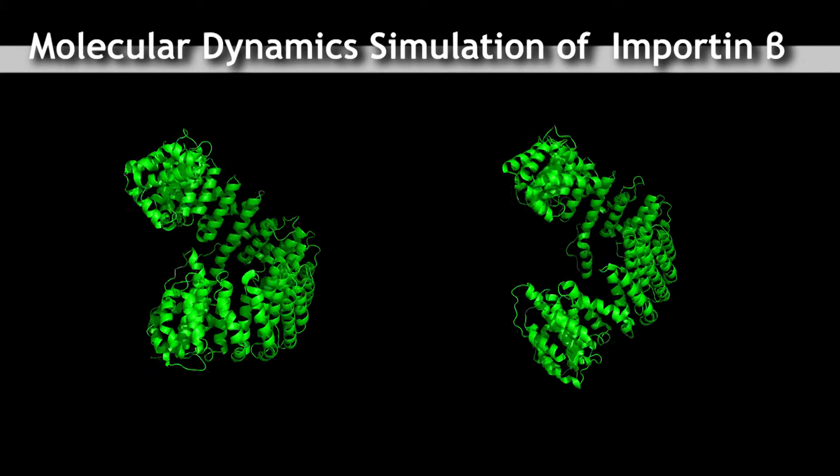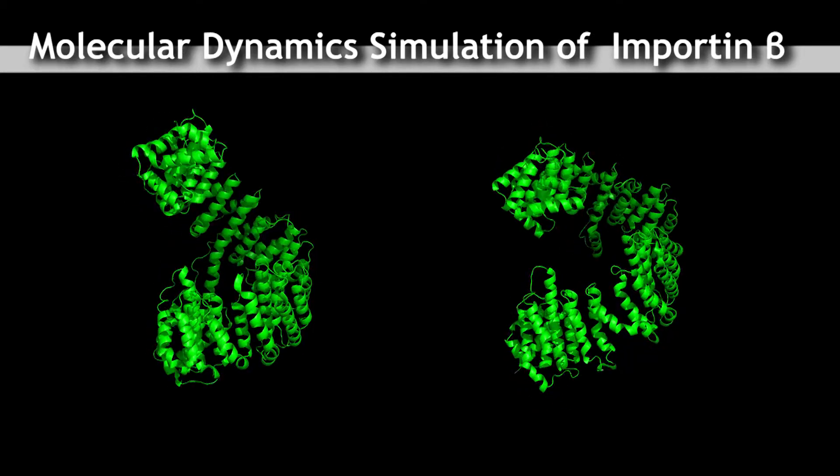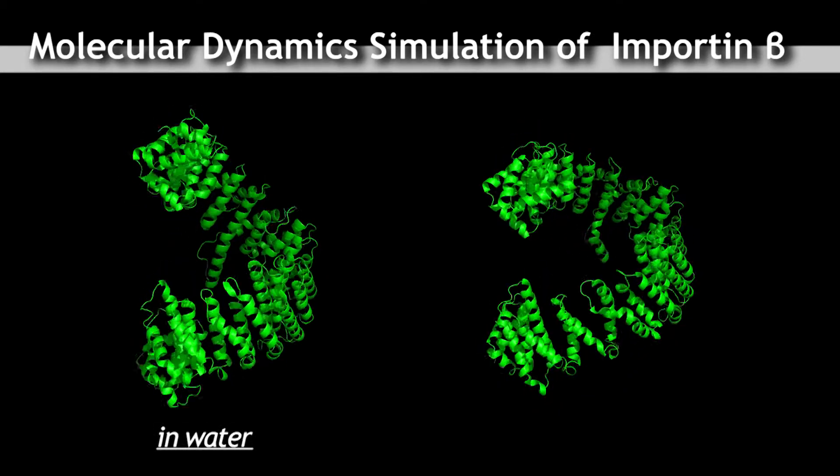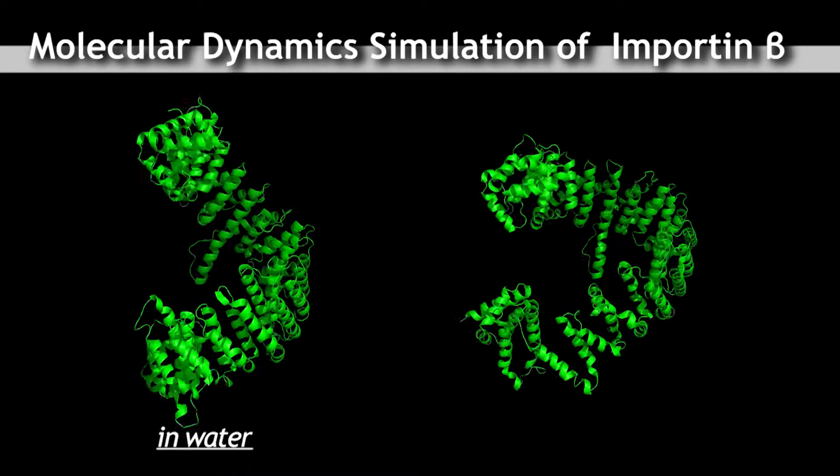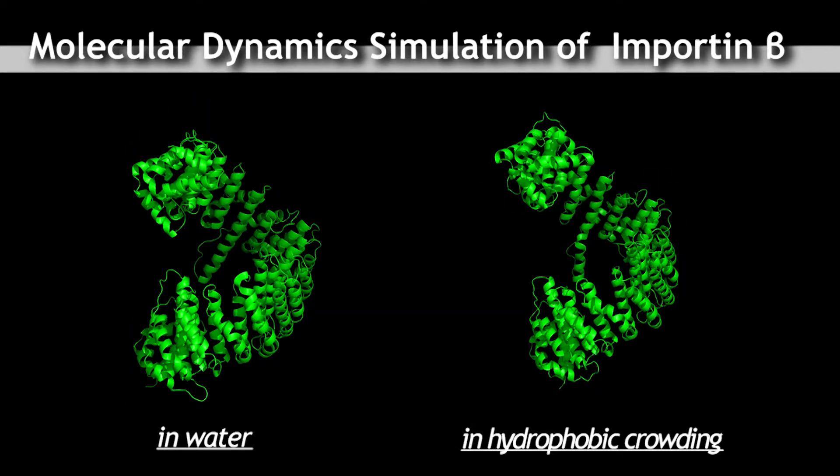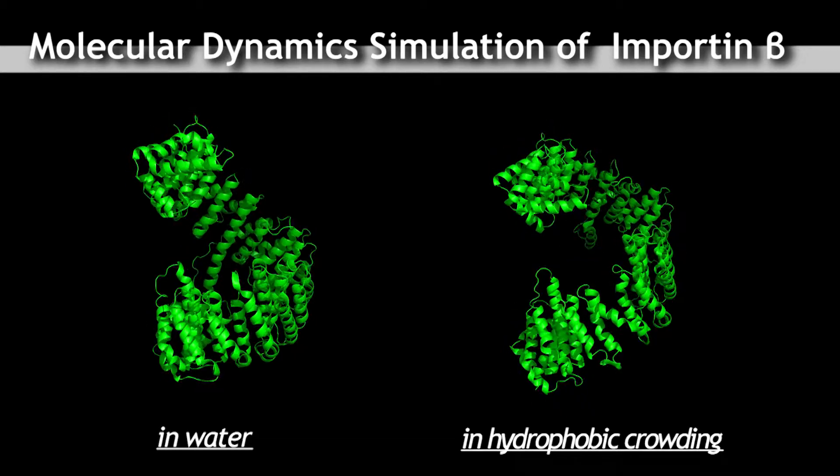Now, you are looking at two different conformations of importin beta. One is in water, which represents the cytoplasm, and the other is in molecular crowding, which represents the nuclear pore.